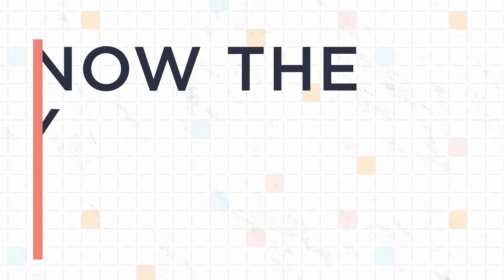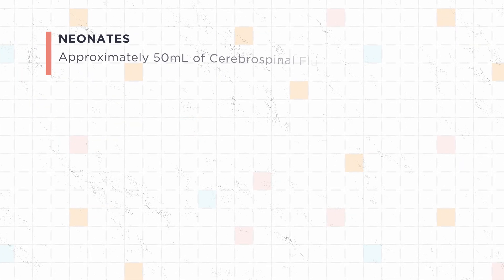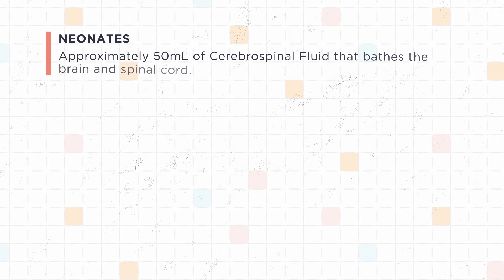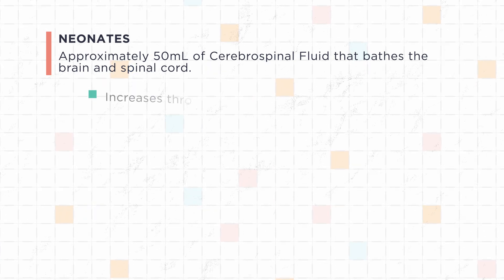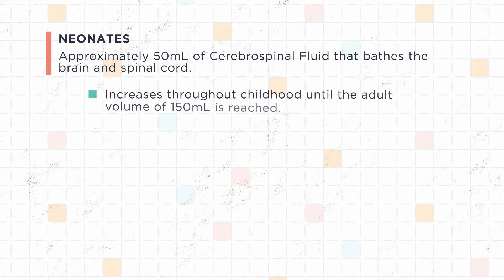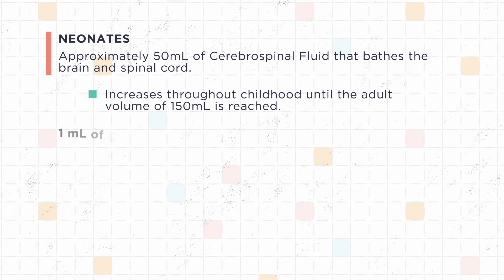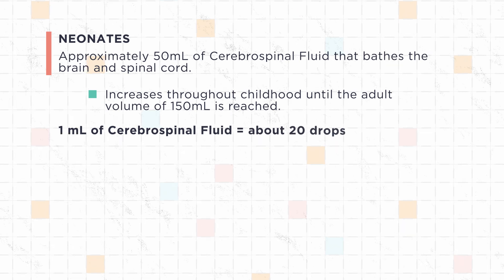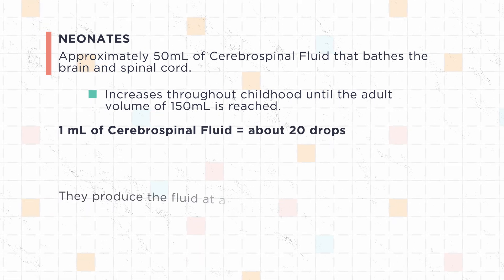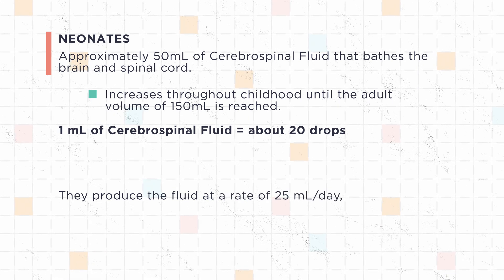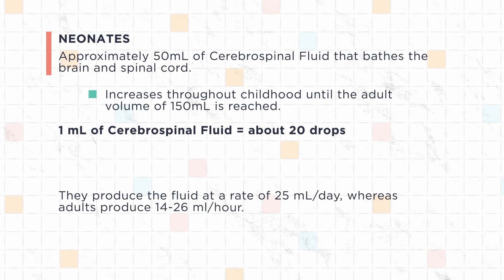Let's review the relevant anatomy. Neonates have approximately 50 milliliters of cerebrospinal fluid that bathes the brain and spinal cord. This increases throughout childhood until the adult volume of 150 milliliters is reached. For reference, one milliliter of cerebrospinal fluid is equivalent to about 20 drops. Neonates produce the fluid at a rate of 25 milliliters per day, whereas adults produce 14 to 26 milliliters per hour.